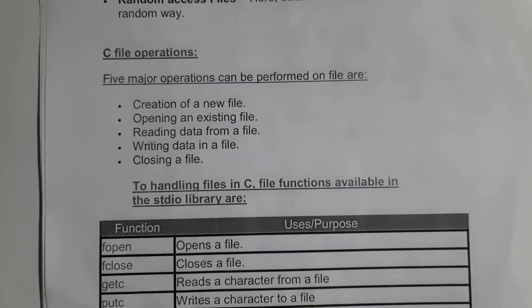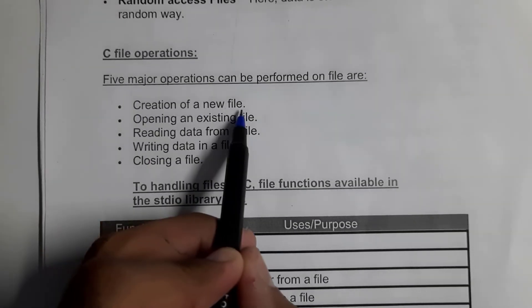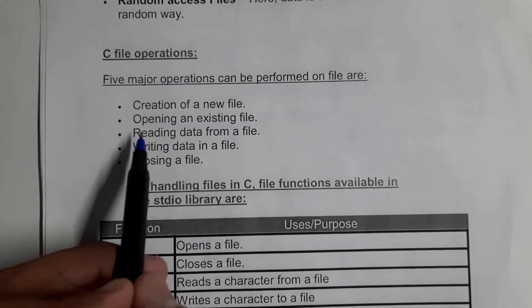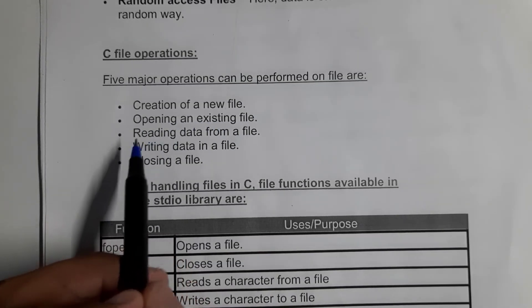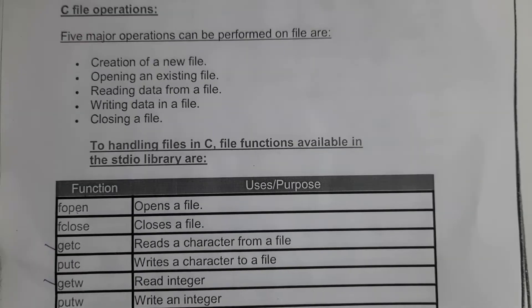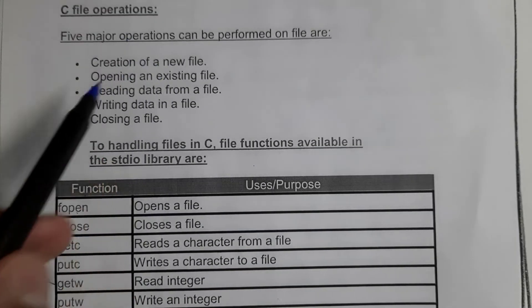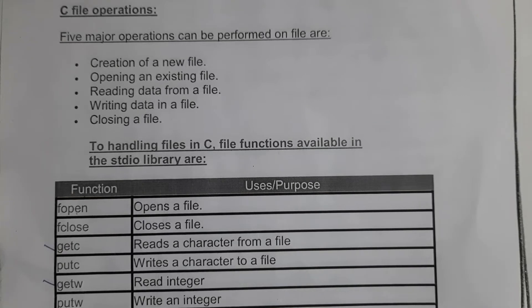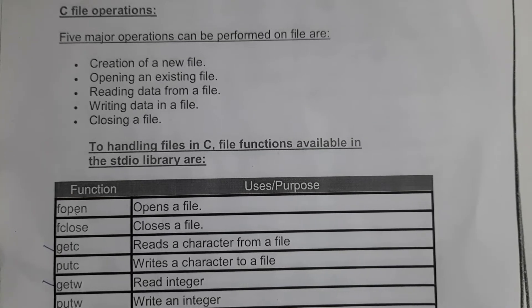There are five major file operations: first, creation of a new file; second, opening an existing file; third, reading a file; fourth, writing a file; and fifth, closing a file. In order to perform these file operations, you need to know the various file functions and the various modes of the file.